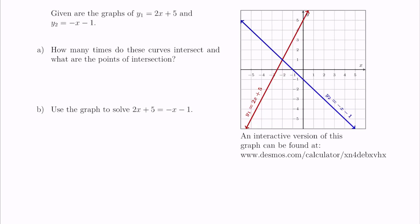Given are the graphs of y1 equals 2x plus 5 and y2 equals negative x minus 1. In part a, how many times do these curves intersect and what are their points of intersection? Looking at the graph, we can see there is one point of intersection. These lines intersect once at that point.